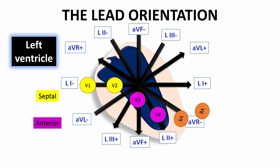V5 and V6 chest leads are closer to the lateral wall of the left ventricle. So they represent the changes that occur in the lateral wall of the left ventricle.